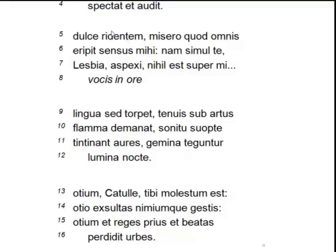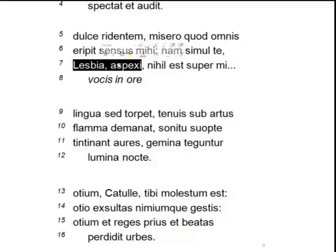All right, so let's just read this down. "Duceri" — that's going to scan long by position. "Erepitsen" — that's going to scan long by position. "Lesbias" — now don't forget that the two A's are going to be elided, so you're going to end up with "Lesbias." Because the remaining syllable is followed by two consonants, it's going to be long by position. There you go.